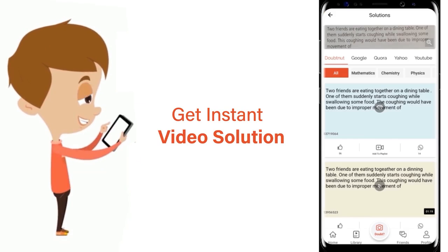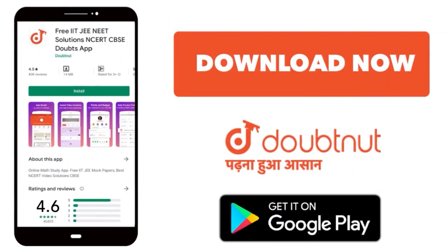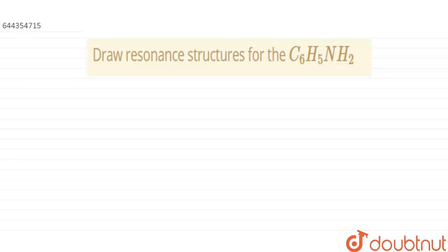The question is we have to draw the resonance structure for C6H5NH2. The structure of C6H5NH2 is a benzene ring with NH2 attached to it.